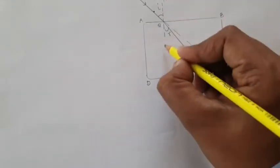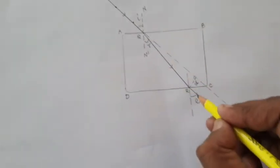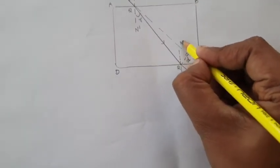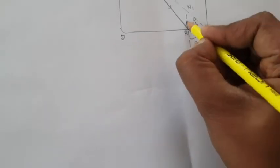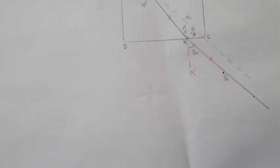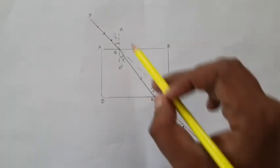So this is how the entire diagram is going to look like once we have traced the path of the ray of light.